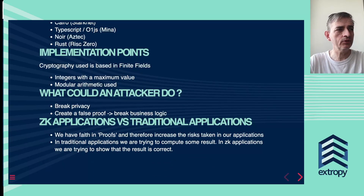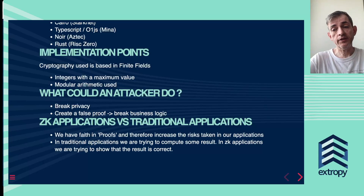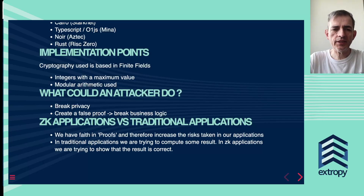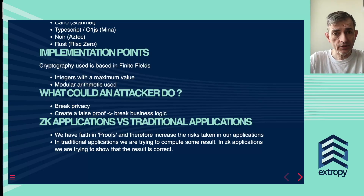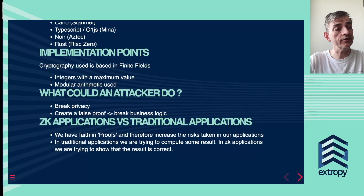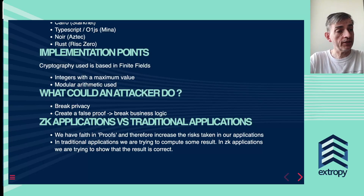What could a potential attacker do if they are attacking one of our applications? It's possible they could break privacy — on StarkNet that's not really a problem — but the main concern is that they can create a false proof, which would allow them to break business logic. If we have a vulnerability in our application, this could allow an attacker to do something malicious, maybe transfer funds when they shouldn't be able to. The zero-knowledge proof created for that transaction would still be a correct proof and would be accepted by the verifier.